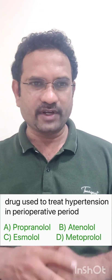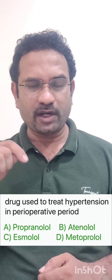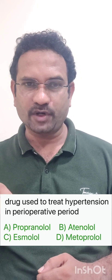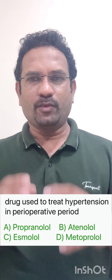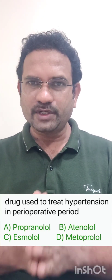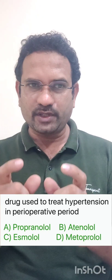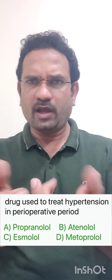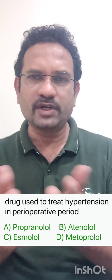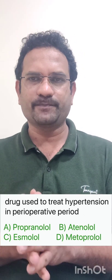The options given are propranolol, atenolol, esmolol, and metoprolol. Most students got stuck with the word 'perioperative period.' All of you must be knowing what hypertension is, but let us understand that word.